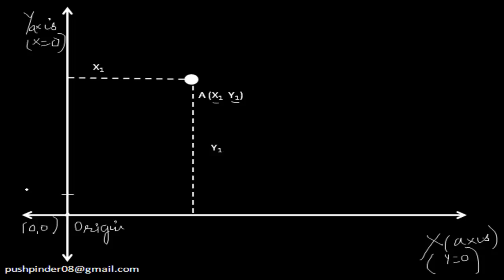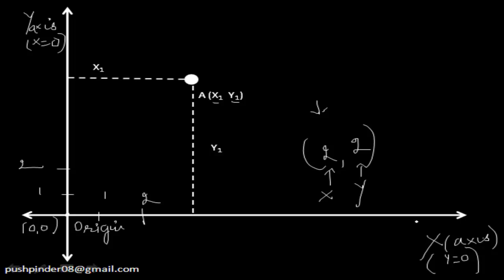Every point has coordinates. Let's suppose this is y = 1, this is y = 2, this is x = 1, and this is x = 2. So if I have to draw a point (2, 2), I am going to draw that point. Whenever coordinates are given to you in this Cartesian form, the x-coordinate comes first and then comes the y-coordinate. So x = 2 comes here and y = 2 comes here, and the point (2, 2) is going to lie right here at this intersection.